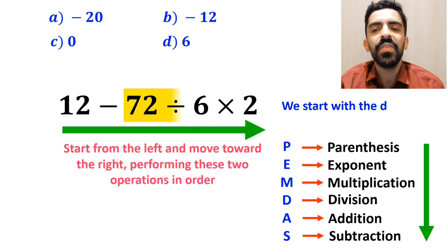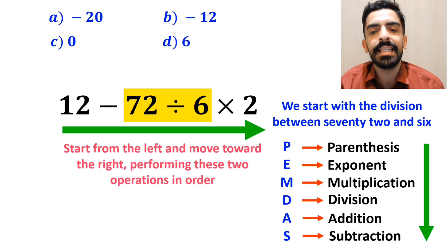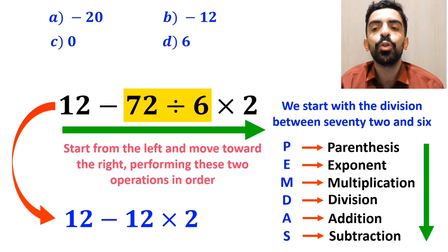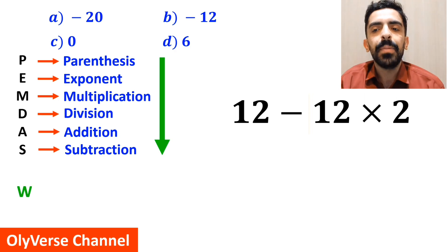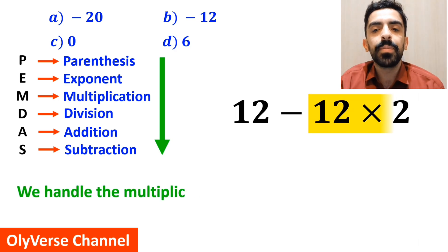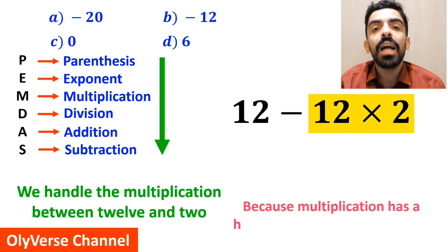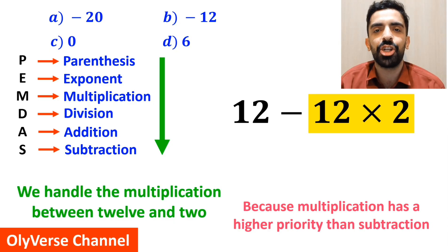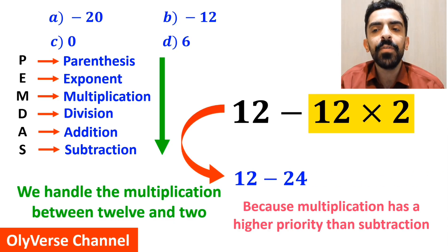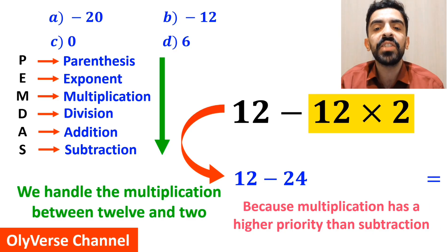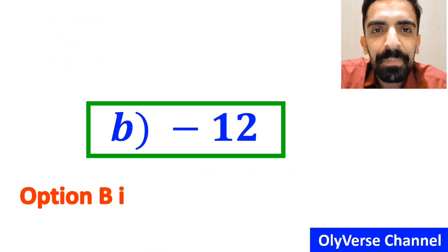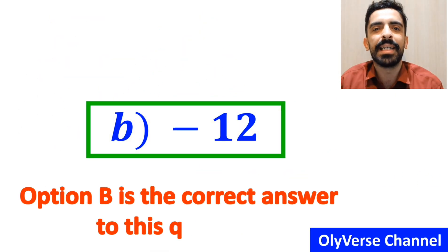So first we start with the division between 72 and 6, which simplifies this expression to 12 minus 12 multiplied by 2. In the final step, we handle the multiplication between 12 and 2, because multiplication has a higher priority than subtraction. And this expression simplifies to 12 minus 24, which ultimately gives us the answer negative 12. That's great — option B is the correct answer to this question.